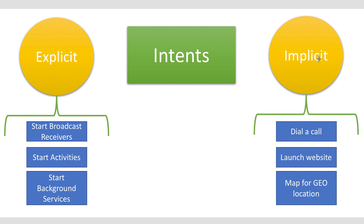The system does so by comparing the contents of the intent object to intent filters, which are structures associated with components that can potentially receive intents. Filters advertise the capabilities of a component and delimit the intents it can handle. A component without any intent filters can receive only explicit intents, while a component with filters can receive both explicit and implicit intents.